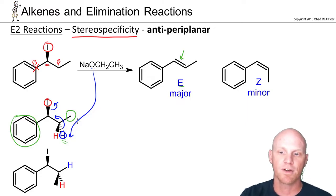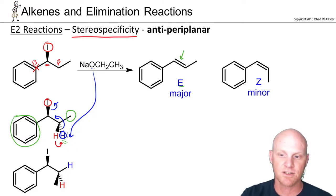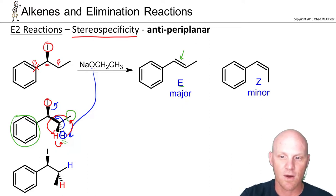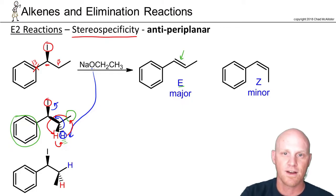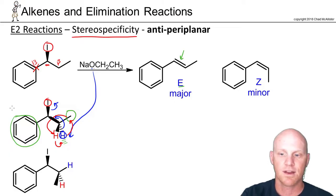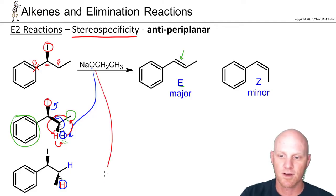Now if we rotate this bond around — specifically the bond between alpha and beta — so that the red hydrogen is in the dashed position, the blue hydrogen moves to where the methyl group was, and the methyl group rotates around to where the red hydrogen used to be. In this new conformation, the red hydrogen is now antiperiplanar to the leaving group. Our strong base comes in to deprotonate that hydrogen, freeing up the electrons to form the pi bond and kicking off the leaving group.